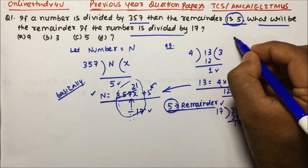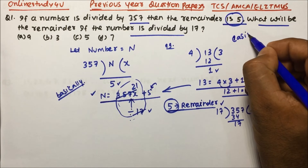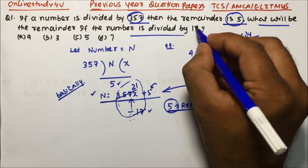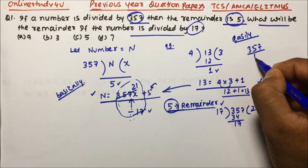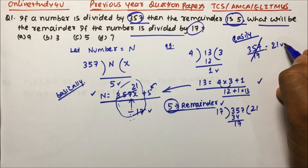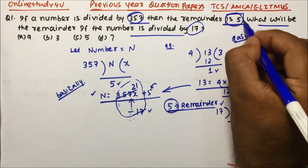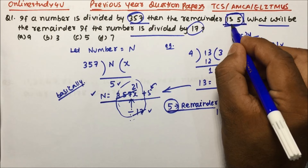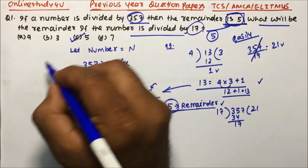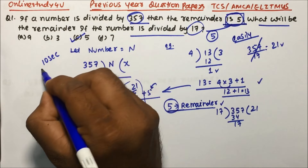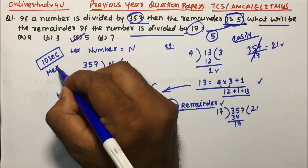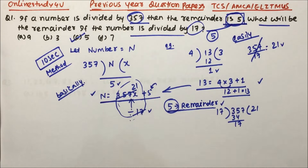This question we could have done very easily. The number is 357 — directly divide 357 by 17. It goes 21 times and the remainder is 5. So the answer is also remainder 5, and option C is the correct answer. Ten seconds is more than sufficient for this question, but I've explained the full method here.